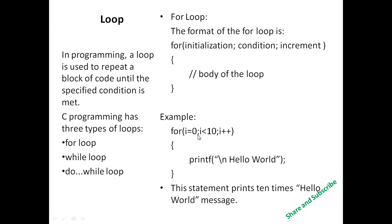This is a simple example of the for loop: for i equal to 0, semicolon, i less than 10, semicolon, i plus plus — and we print 'hello world'. This message will be printed 10 times.